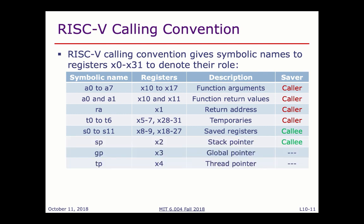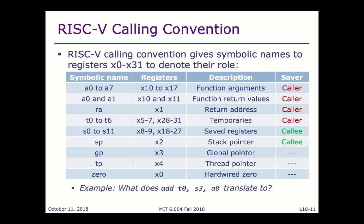There's also the stack pointer (x2), global pointer, and thread pointer — these are constant and neither callee-saved nor caller-saved since they're not supposed to be written. x0 is hardwired to 0 and can be called 'zero'. As an example: given 'ADD T0, S3, A0', you look up the register table — T0 is x5, S3 is x19, A0 is x10 — giving 'ADD x5, x19, x10'.